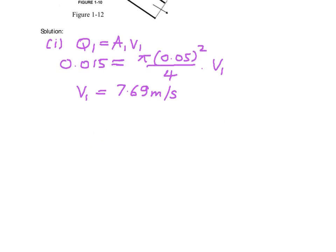Now, let's look at part 2. We are required to calculate the velocity at 2 or the velocity at 3. Remember, both of them are the same. So we make use of the continuity equation, that Q1 is equal to Q2 plus Q3. We already know what is Q1. We know the details of the area of Q2 and the area of Q3.